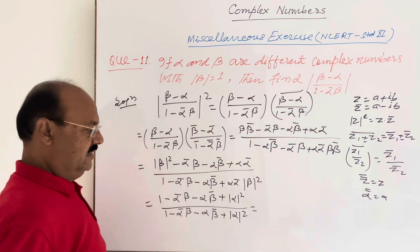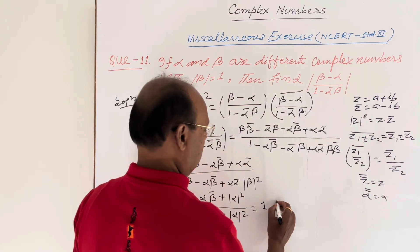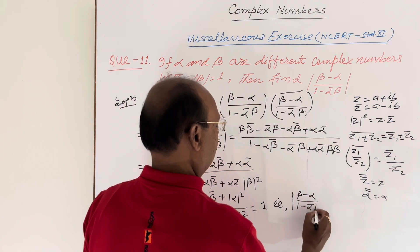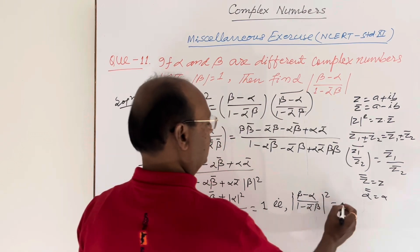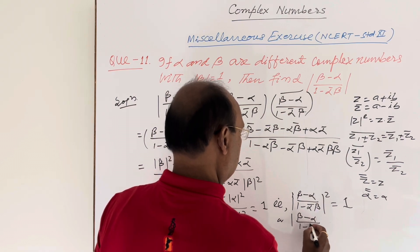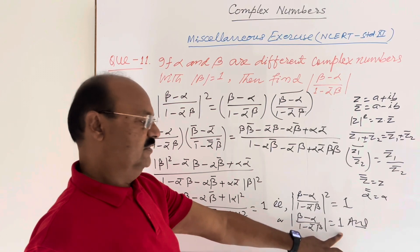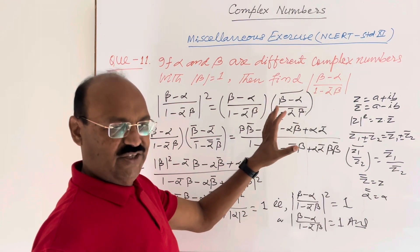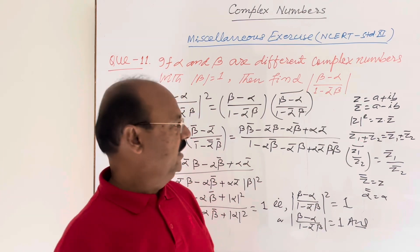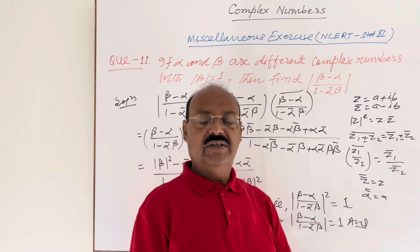The denominator gives exactly the same expression: 1 minus alpha-bar into beta minus alpha into beta-bar plus modulus of alpha squared. So numerator and denominator are equal, giving us 1. Therefore modulus of beta minus alpha upon 1 minus alpha-bar into beta, whole squared equals 1, which means the modulus itself equals 1. This is the answer. Hope you have understood it — please share this video with your friends, and if you have any doubt or suggestion, please write in the comment box.